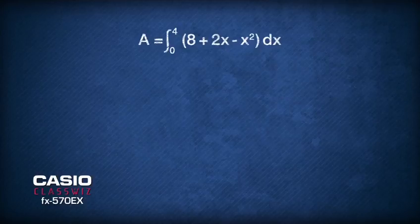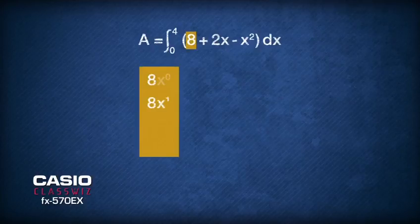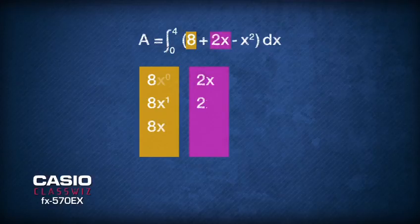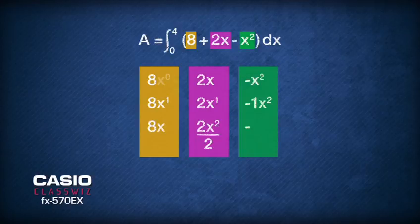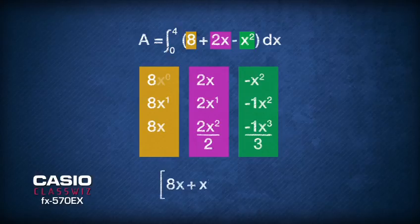To integrate, the constant 8 becomes the coefficient of x. The term 2x integrates to become 2 times x squared over 2, which simplifies to just x squared. And finally, the term of negative x squared integrates to become negative x cubed over 3.